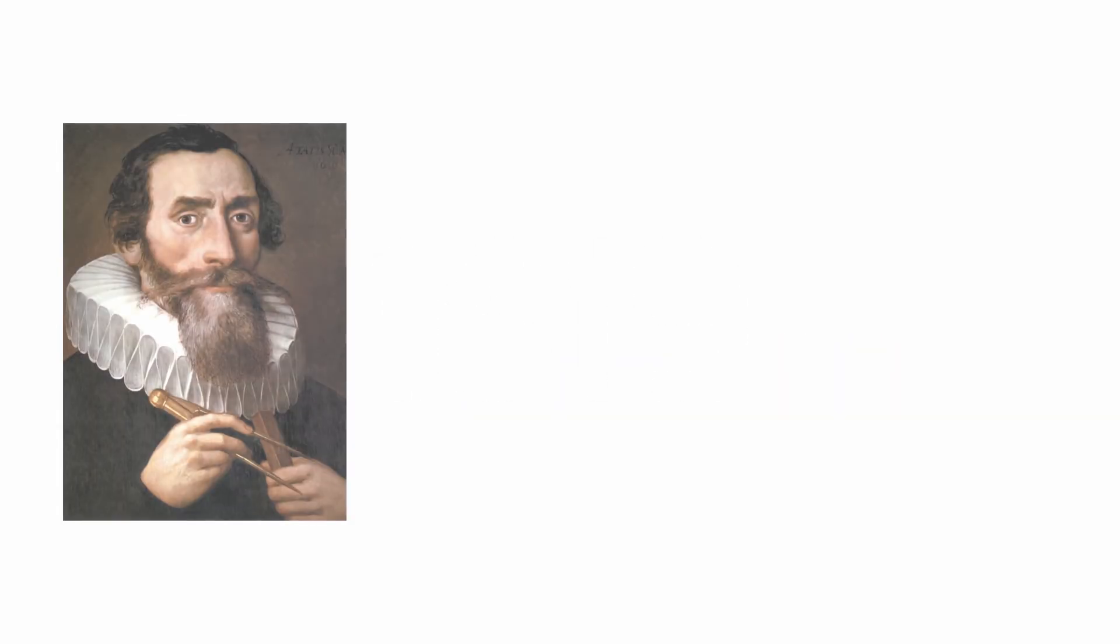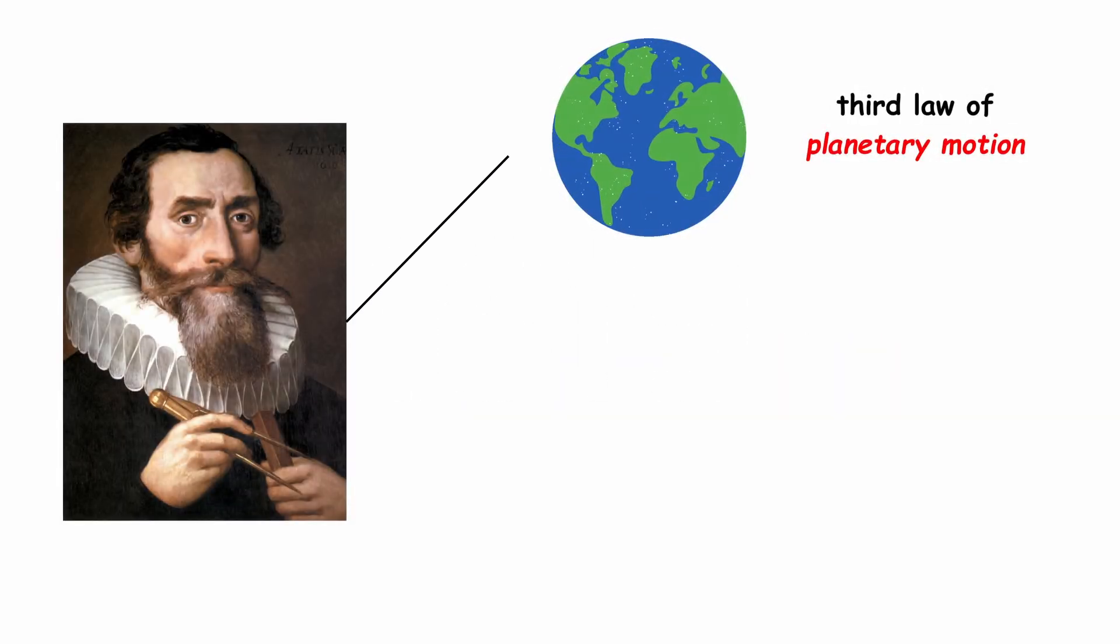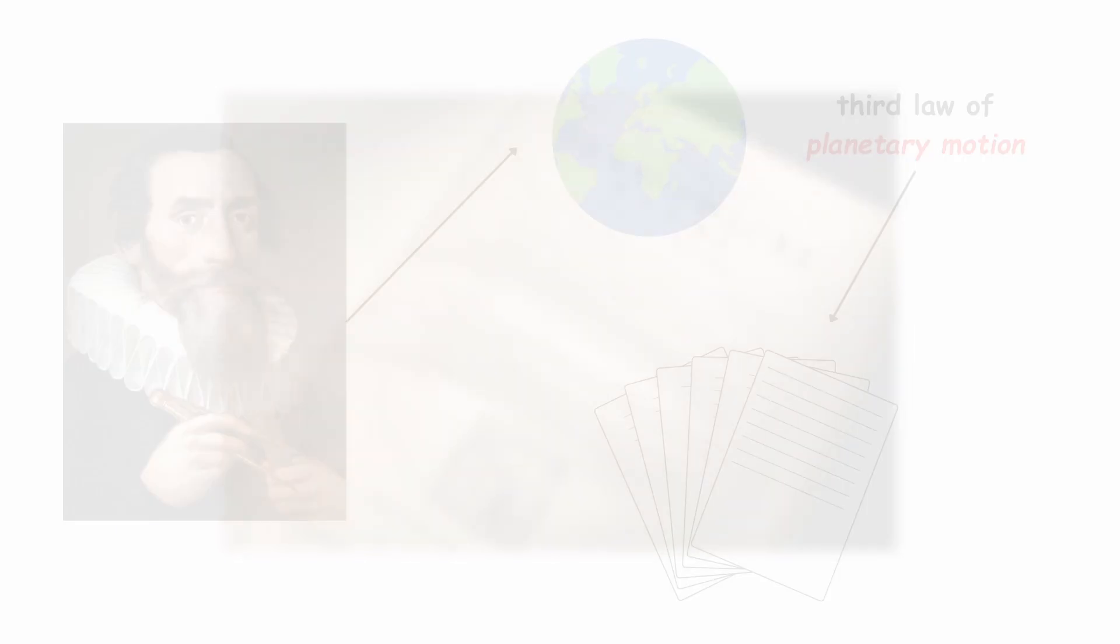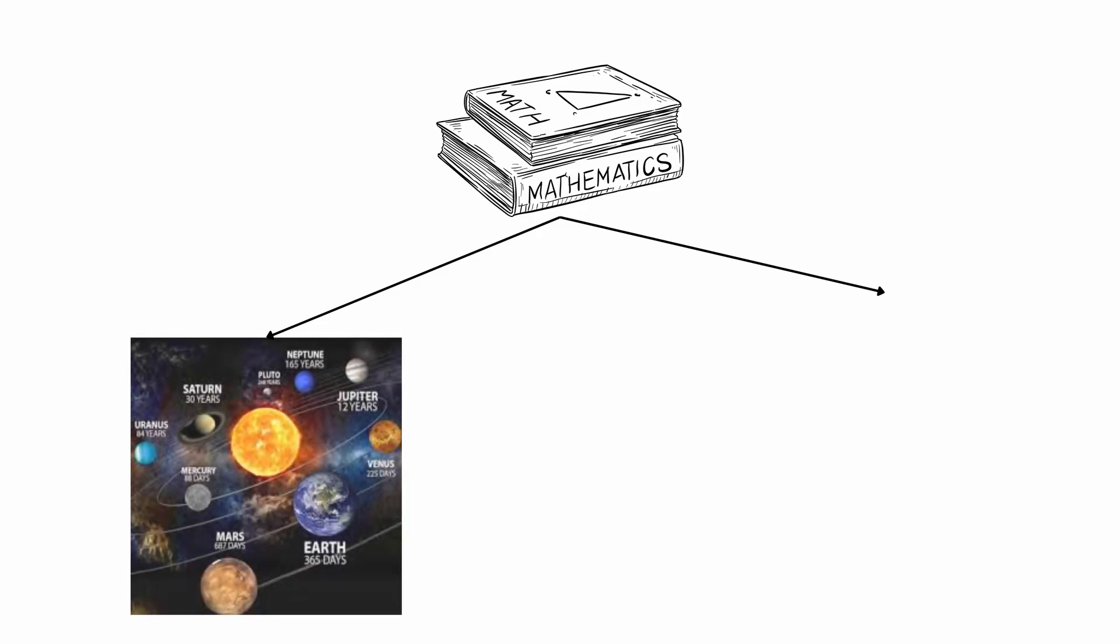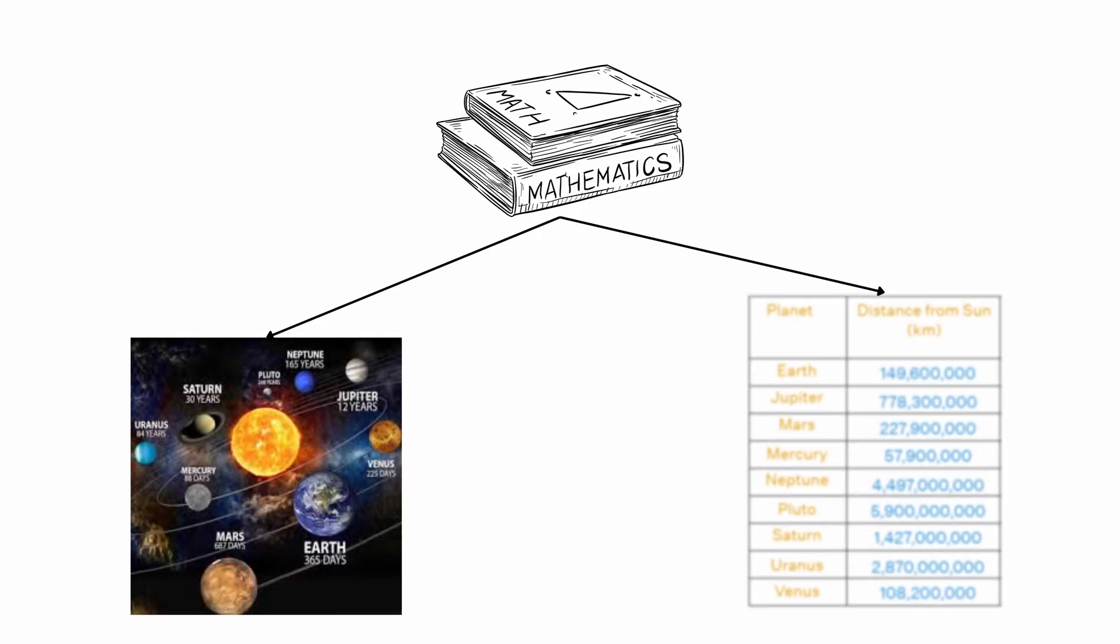Johannes Kepler – Third Law of Planetary Motion. In 1619, Johannes Kepler formulated his third law of planetary motion in his work, Harmonices Mundi. This law describes a precise mathematical relationship between a planet's orbital period and its mean distance from the Sun.